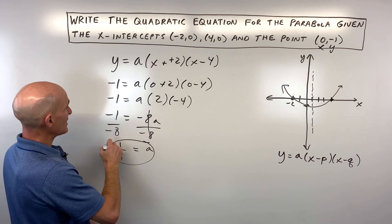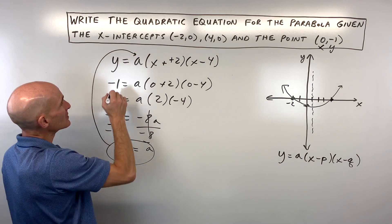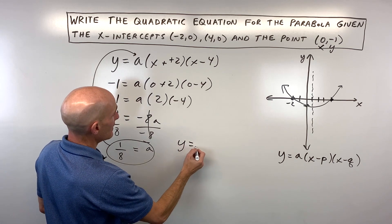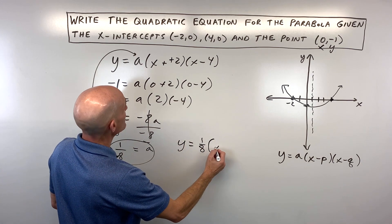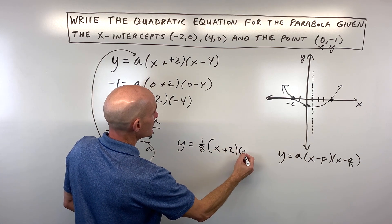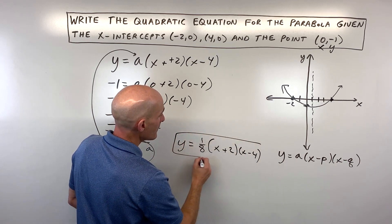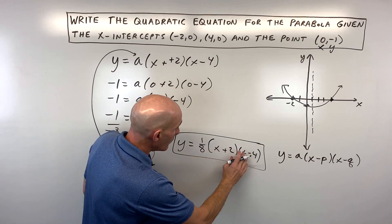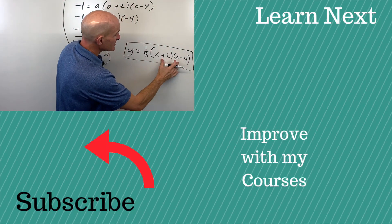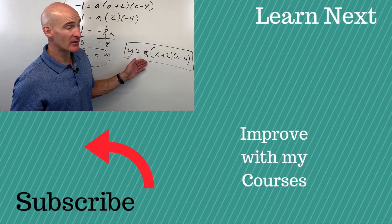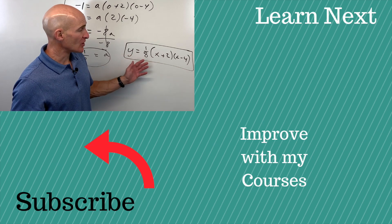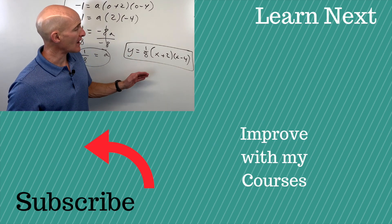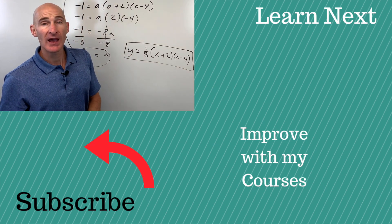And what we can do is we can take this 1 eighth, put it back into our equation for a, and we've got it. So it should look something like this right here. And this is our intercept form. Now, if you want to, you can multiply these two binomials together and then go ahead and multiply everything by 1 eighth and you can put it into the standard form. But for right now, let's just leave it in the intercept form and you got it.